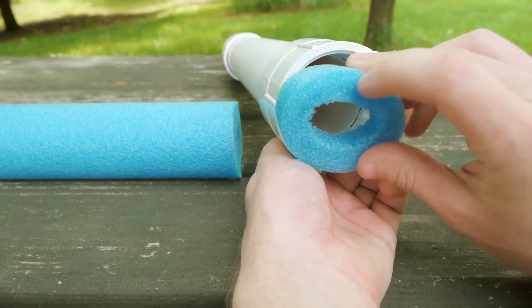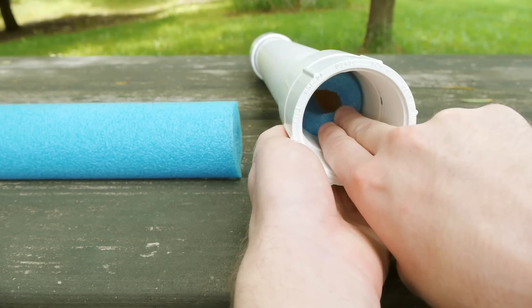The section of foam is inserted into the chamber and pressed all the way to the end with a spare piece of pipe. This will be a perfect cushion to prevent the piston from slamming into the end of the barrel, which might cause damage.